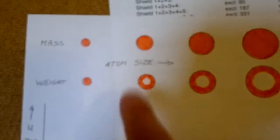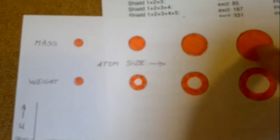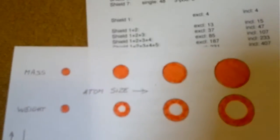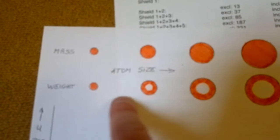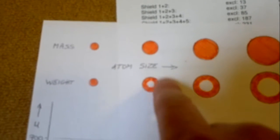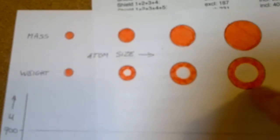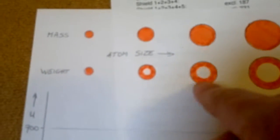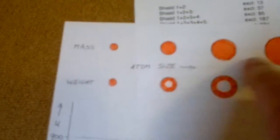So when we have an atom growing in size, the mass grows with it in a very nice line, it should. But the weight, the gravitons only interact with the outer shell, with the outside of the atom. So mass and weight differ. And we can see this in the graph.